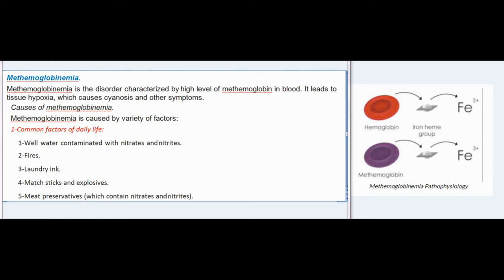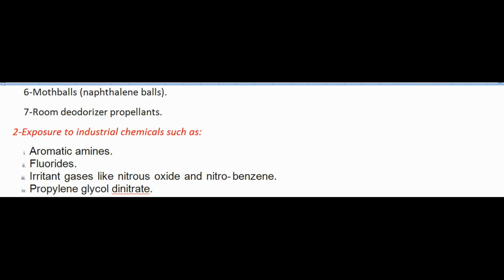Methemoglobinemia is the disorder characterized by high level of methemoglobin in blood, leading to tissue hypoxia, causing cyanosis and other symptoms. Causes: (1) common factors of daily life — well water contaminated with nitrates and nitrites, fires, laundry ink, matchsticks and explosives, meat preservatives containing nitrates and nitrites, moth balls (naphthalene balls), room deodorizer propellants.